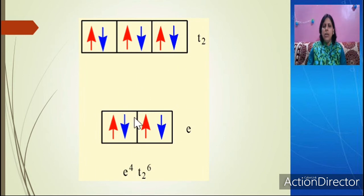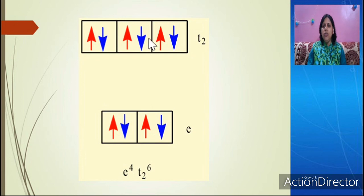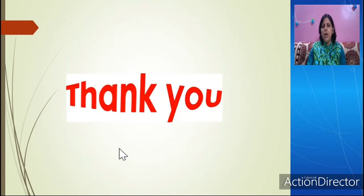In the next configuration, the D10 configuration, all the orbitals become filled. E has 4 electrons and T2 has 6 electrons, so configuration is E4, T2(6). This D10 configuration will be diamagnetic in nature because all the electrons are paired. So we have seen the filling of electrons in tetrahedral complexes — they are high spin complexes and weak field complexes.